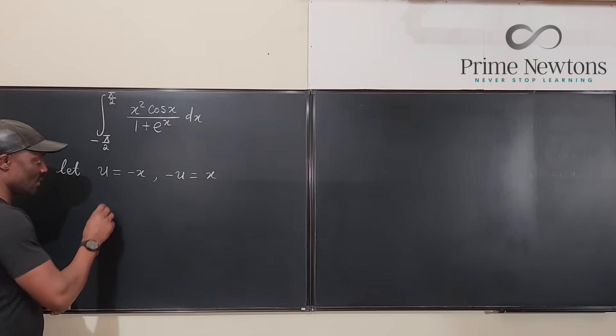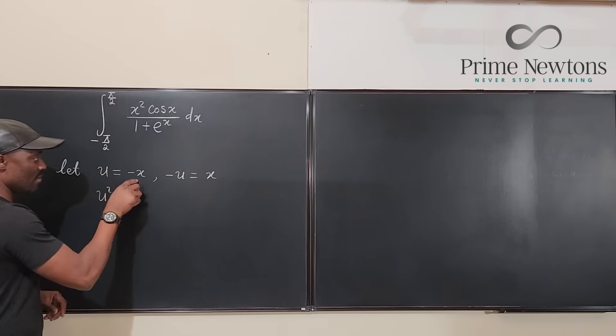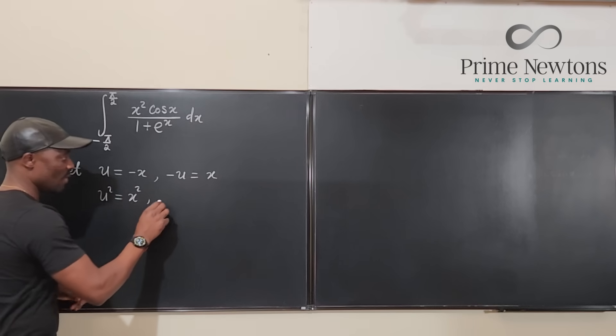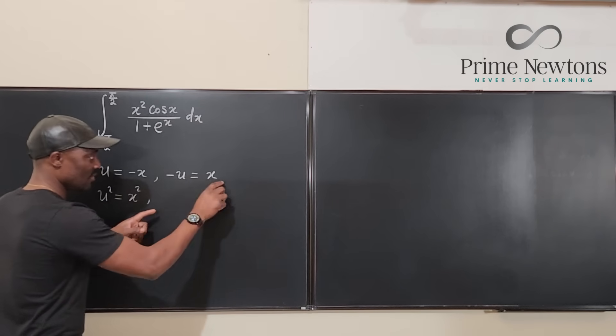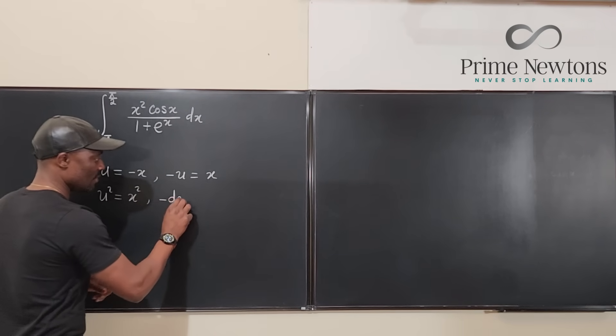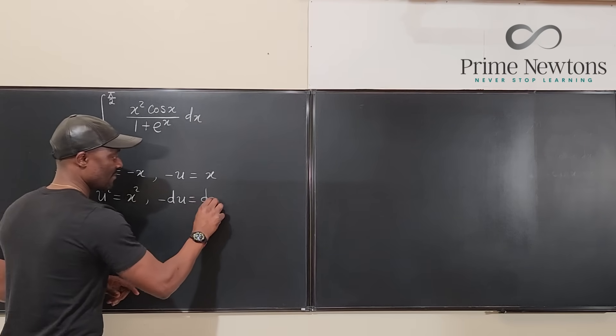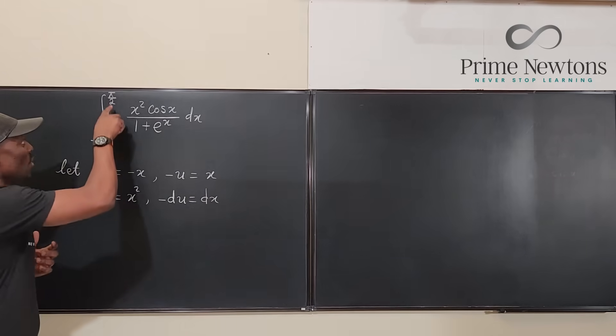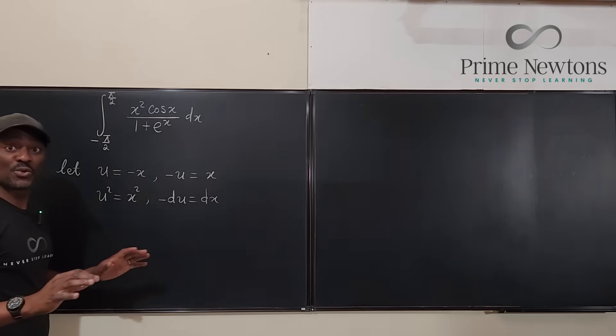But looking at this we know that u squared if you square both sides it's going to be x squared. And we know that if you take the derivative negative du equals dx.